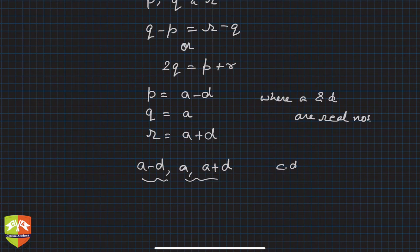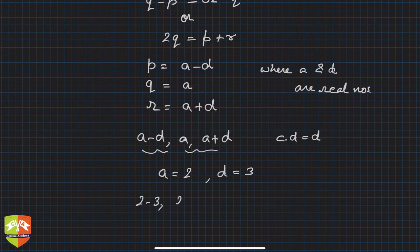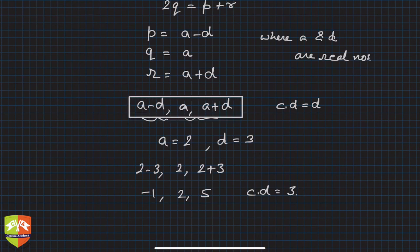Let's take an example: let a equal 2 and d equal 3. Then the first term is 2 minus 3, the second is 2, and the third is 2 plus 3 — that is, minus 1, 2, and 5. These three terms are clearly in AP with common difference 3. So if you have terms in the form a minus d, a, and a plus d, they will always be in AP.